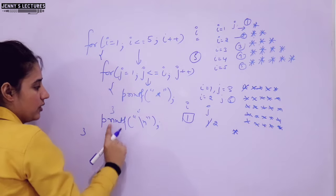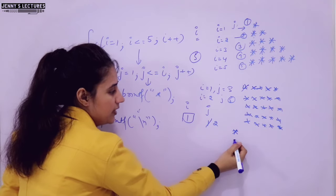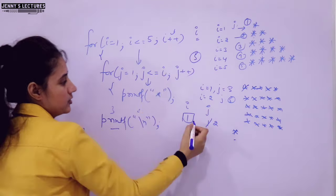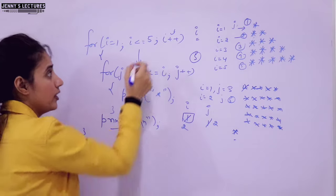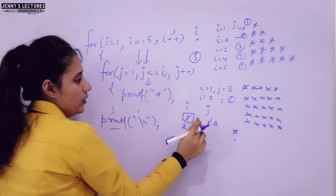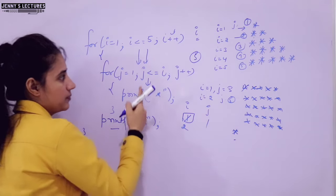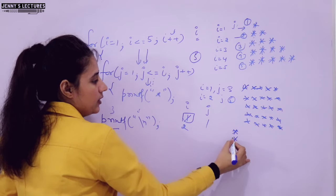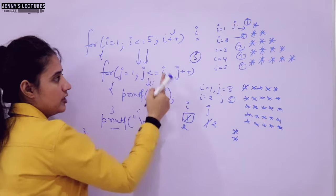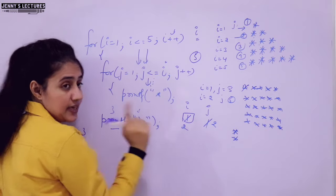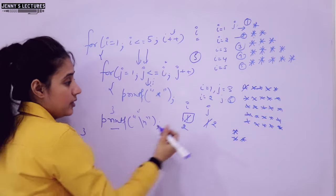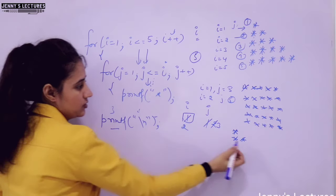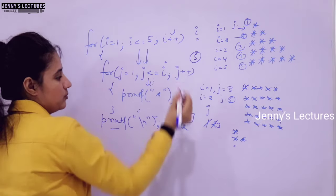After the inner loop exits, we execute printf slash n, so the cursor moves to the next line. Then i plus plus, i becomes 2. 2 less than equal to 5 - condition true, enter the loop again. Now j is re-initialized to 1. 1 less than equal to 2 - condition true, print a star. j plus plus, j becomes 2. 2 less than equal to 2 - condition true, print another star. j plus plus, j becomes 3. Is 3 less than equal to 2? No, control goes out of the loop, then slash n - cursor moves to the next line. i plus plus, i becomes 3.